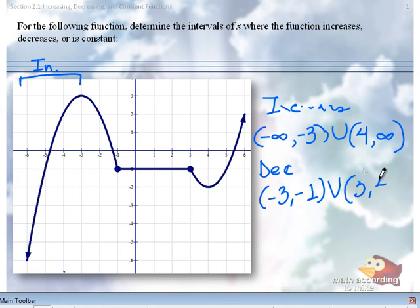So when you are writing increase, decrease, constant, you are not saying from this point to this point is where the increase, decrease, constant occurs. You are saying just the values for X.